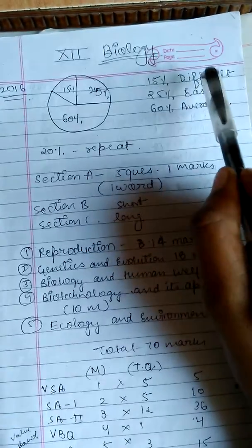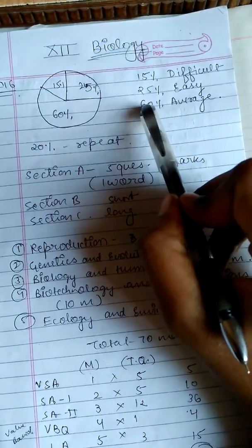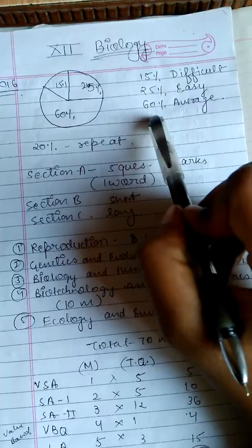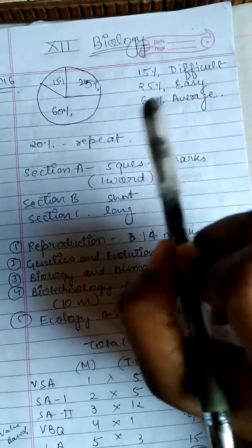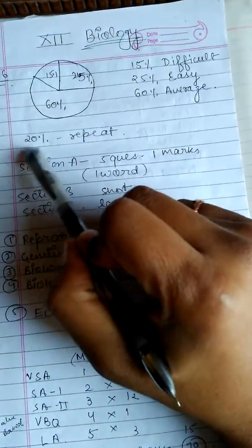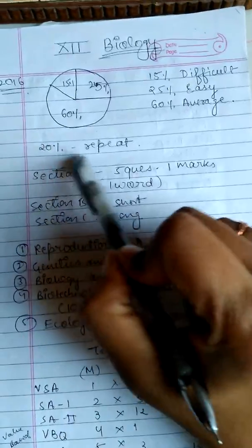50% paper is always difficult, 25% is always easy and 60% is average paper. And you know what, 20% of the paper repeats every time.